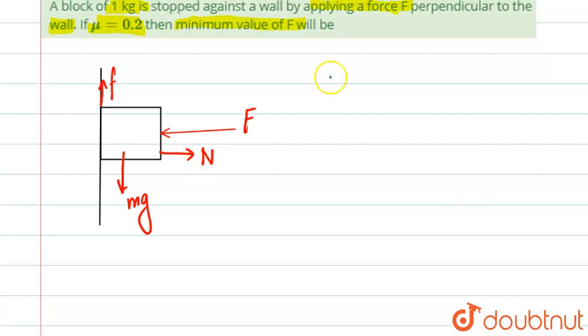So if you see properly then you will clearly see that F must be equal to N. So force applied must be equal to normal force and friction force must be equal to MG for the block to be in equilibrium. This is the minimum thing we are taking.